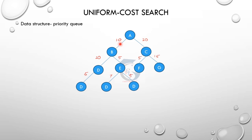A disadvantage is memory usage when visiting many nodes across multiple levels. For example, from root node A, the path A to B to E has costs 10 plus 5 plus 5 equals 20. We choose the minimum cost path to reach the goal.